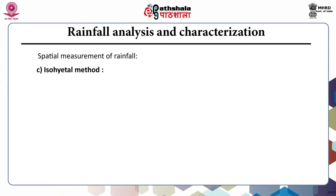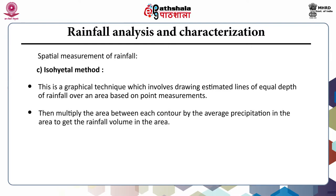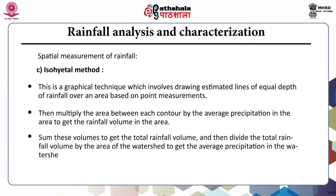The isohyetal method is a graphical technique which involves drawing estimated lines of equal depth of rainfall over an area based on point measurements. Then multiply the area between each contour by the average precipitation in that area to get the rainfall volume. Sum these volumes to get the total rainfall volume, and then divide the total rainfall volume by the area of the watershed to get the average precipitation in the watershed.